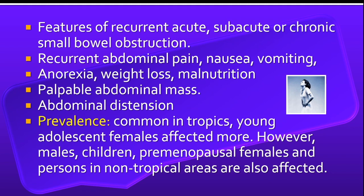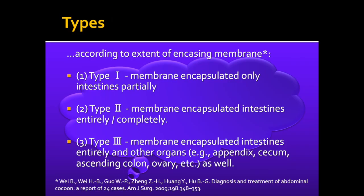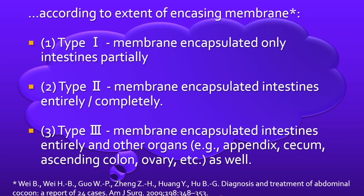However, males, children, premenopausal females and persons in non-tropical areas are also affected. There are three types according to the extent of the enhancing membrane. In type 1, the membrane encapsulates only the intestines partially. In type 2, the membrane encapsulates the intestines almost entirely and completely. In type 3, the membrane encapsulates the intestines entirely along with other organs such as appendix, cecum, ascending colon, and ovary.